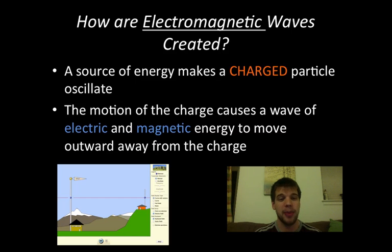For an electromagnetic wave, a source of energy makes a charged particle oscillate. A particle that has either positive or negative charge is going to move up and down. Instead of the particle making things next to it move, it causes this wave of electric and magnetic energy to go outward away from the particle itself.